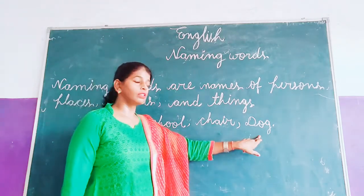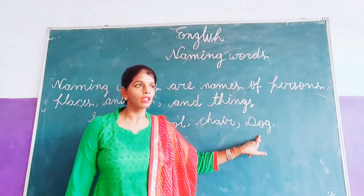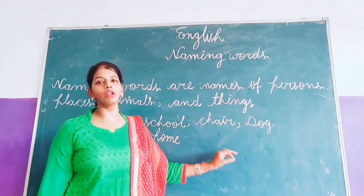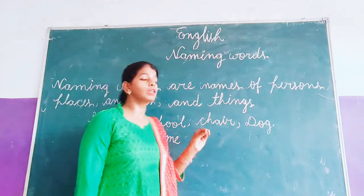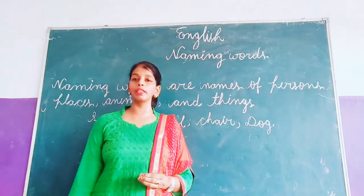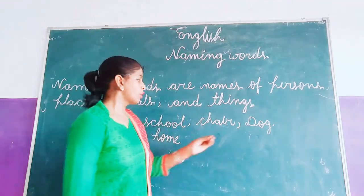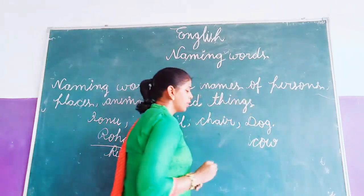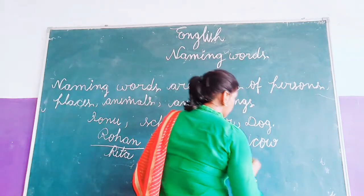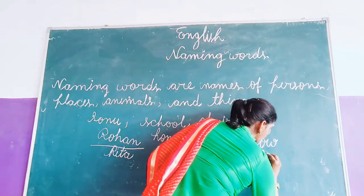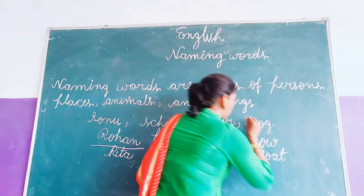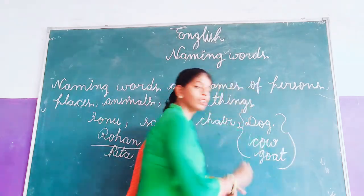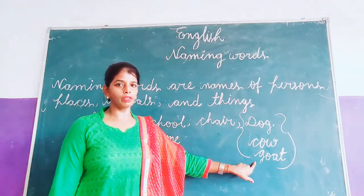Next name is dog. You know very well — an animal name is called a naming word. For example, dog, cow, goat. These all are animals and these are all called naming words.